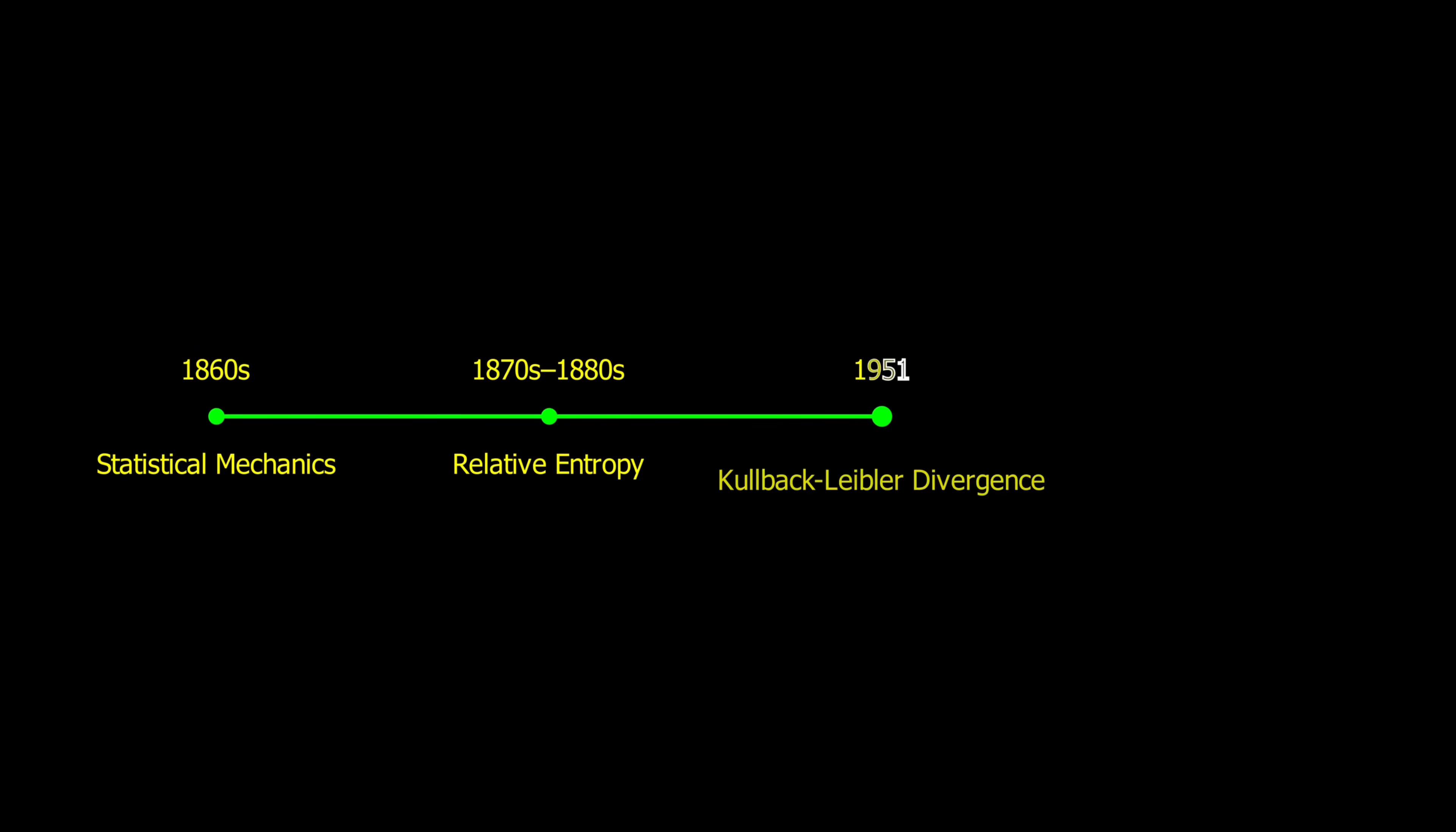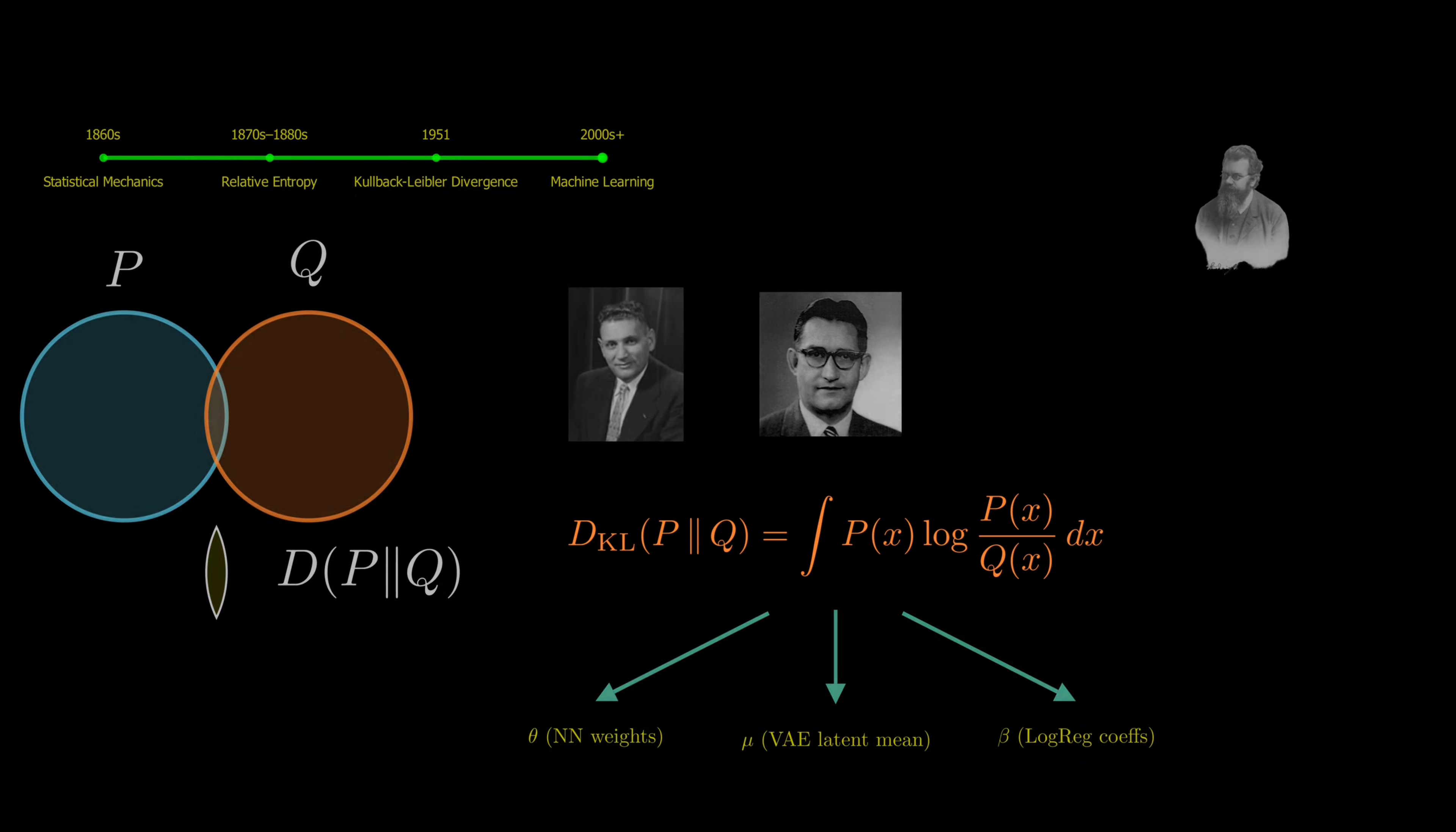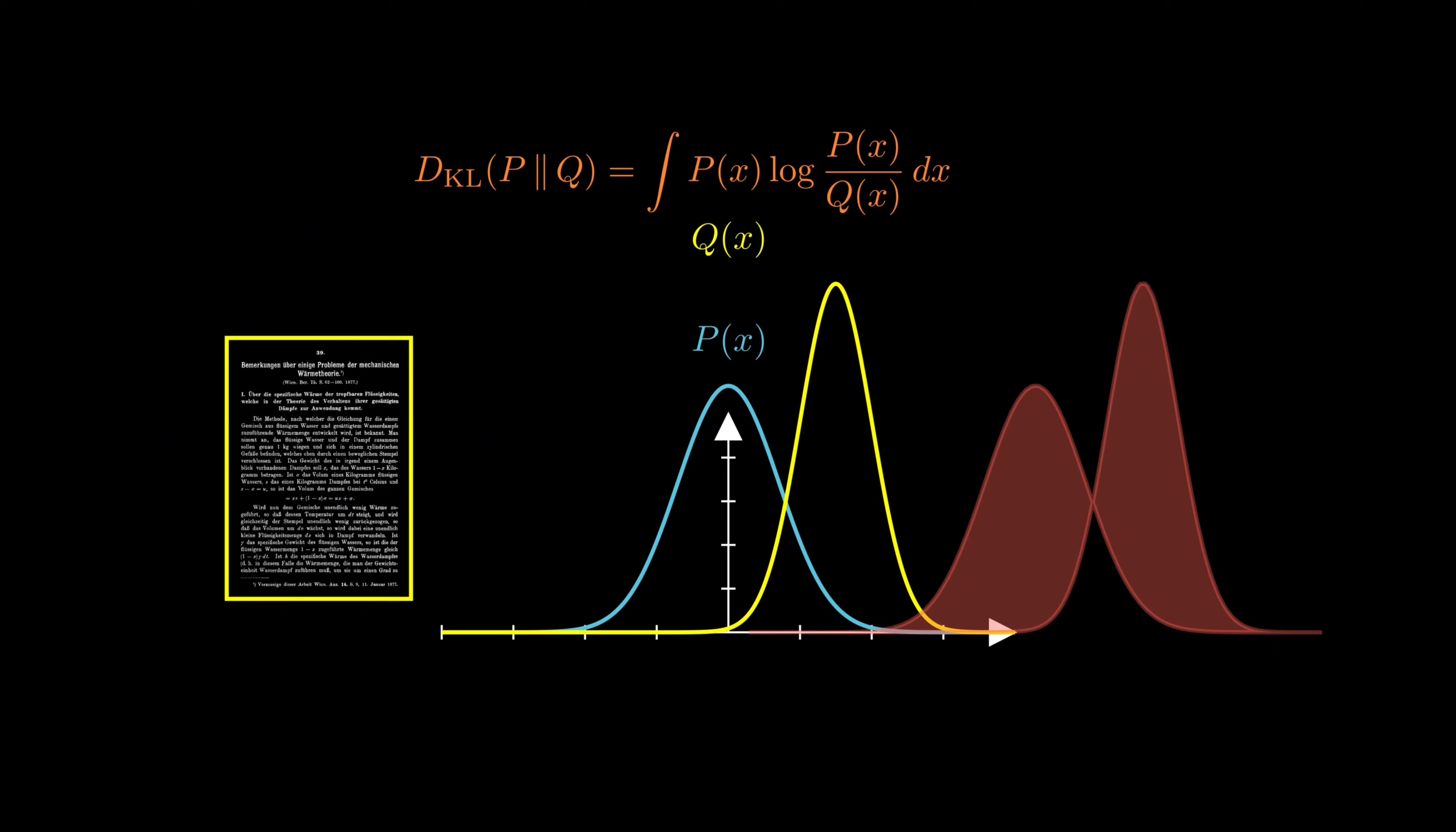Here's where a century-old idea becomes our guiding light. Relative entropy, first introduced by physicist Ludwig Boltzmann, and later reintroduced by Kullbach and Leibler as the KL divergence. This simple equation is actually fundamental for estimating the parameters in machine learning models. In his influential paper, Further Remarks on Some Problems of the Mechanical Theory of Heat, Boltzmann introduced this equation as the measure of the difference, or divergence, between two probability distributions.